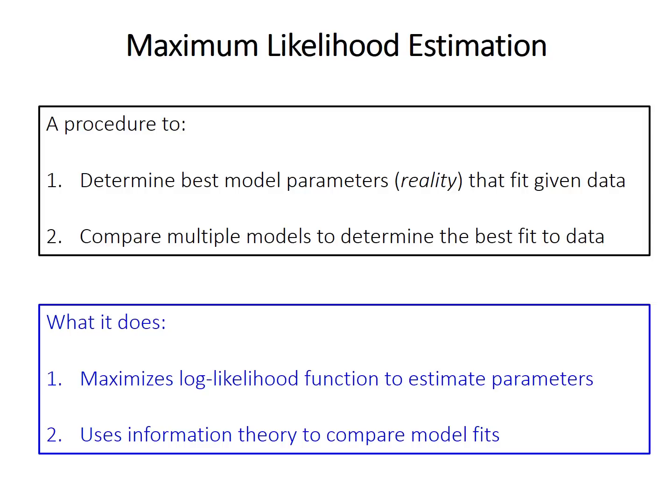So maximum likelihood estimation has two goals. First, it determines the best model parameters, the most likely reality that fits a given set of data. So this is the likelihood part. We want to find the most likely parameters, the most likely reality or model for the given set of data.